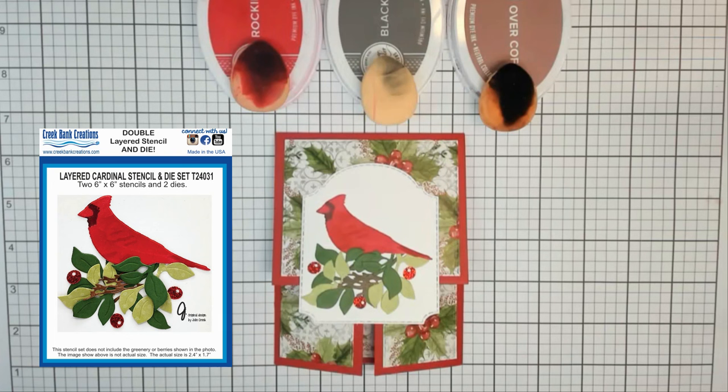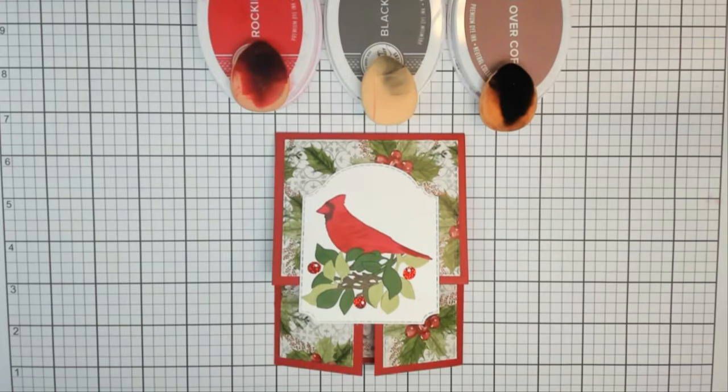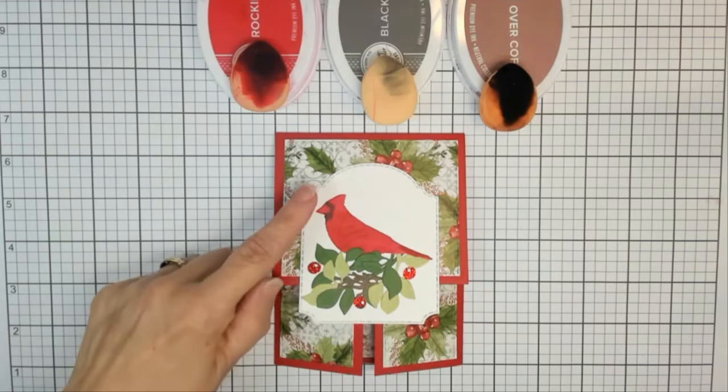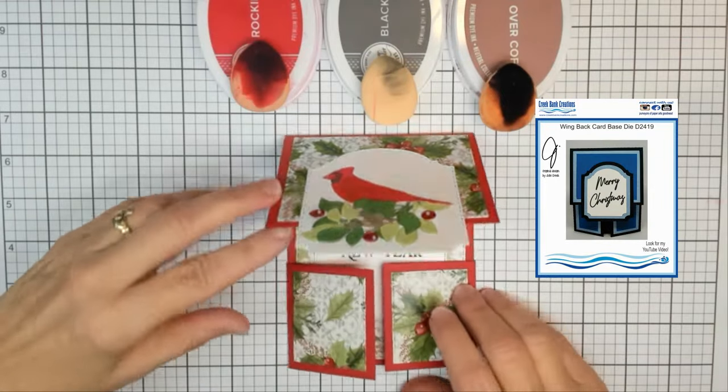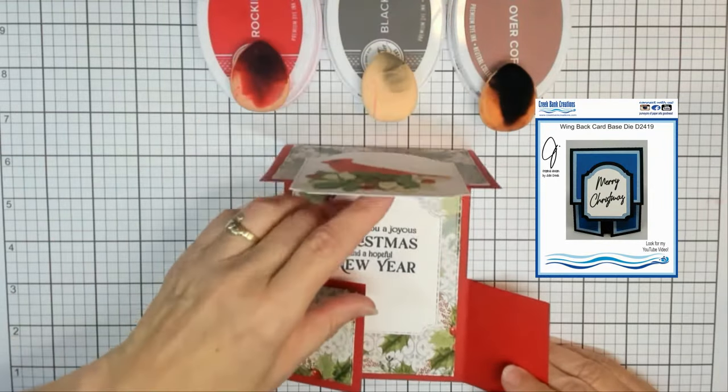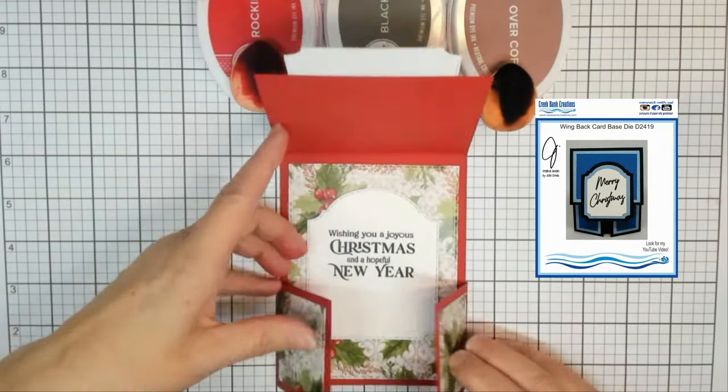It's a layered cardinal stencil and that set includes two dies—a die for the cardinal and a die for the branch. I'm really thrilled to be with you here today to talk about it. Last week we talked about the wingback card base, and in that video I showed the layered cardinal stencil and die set.